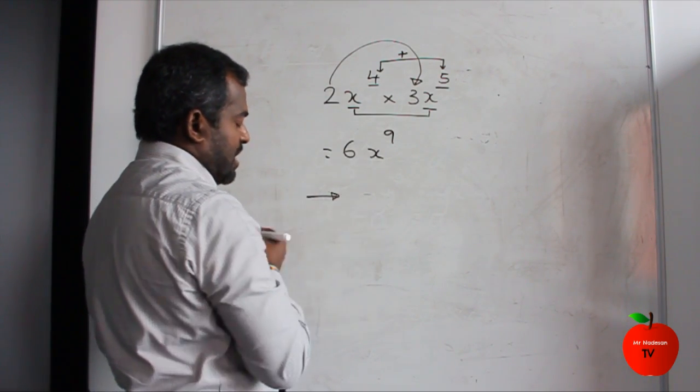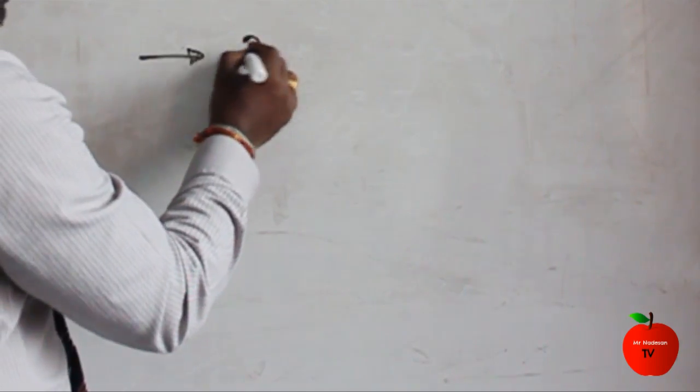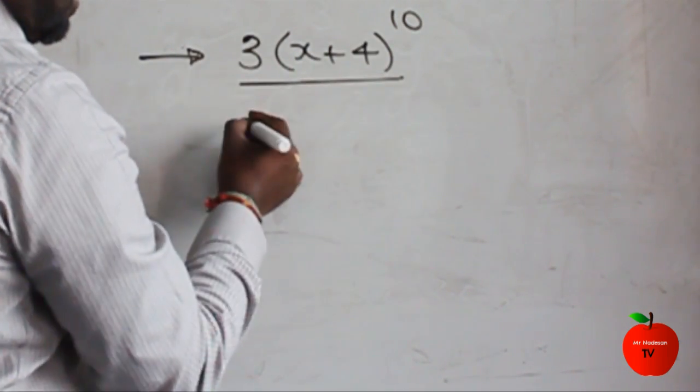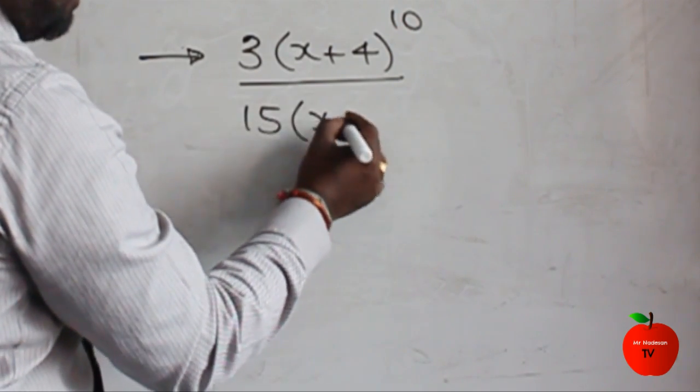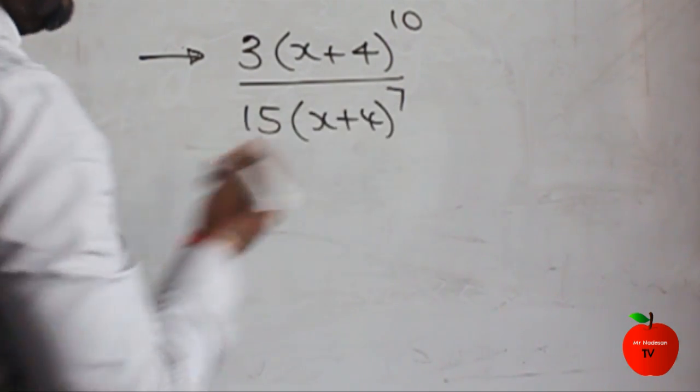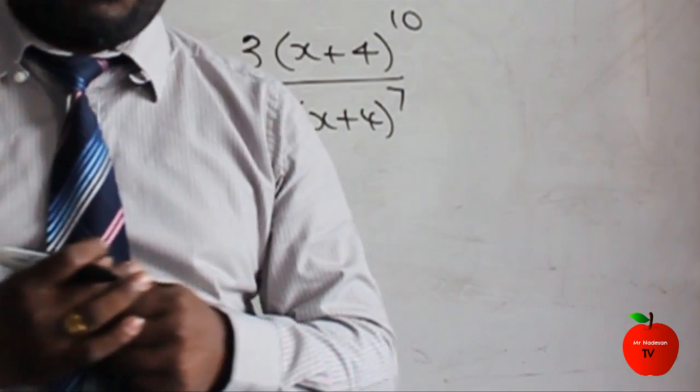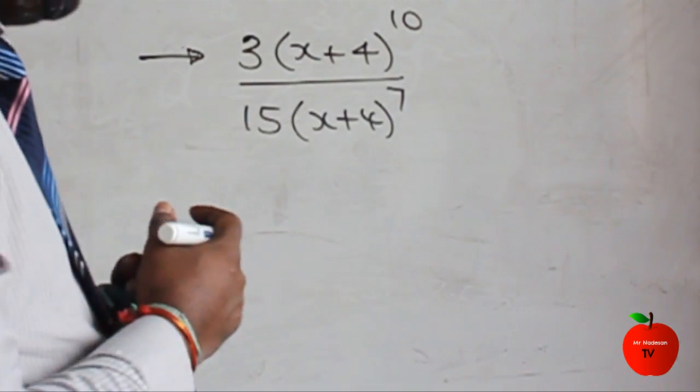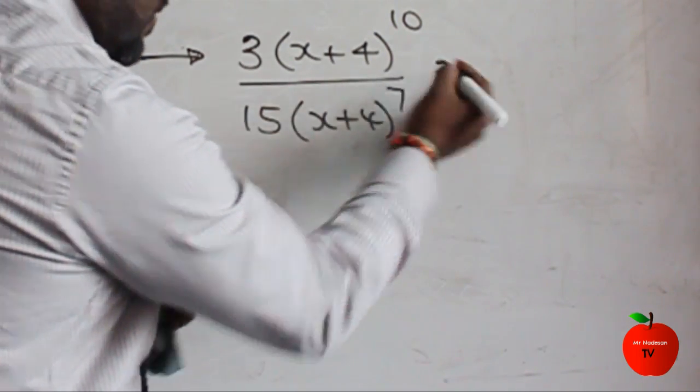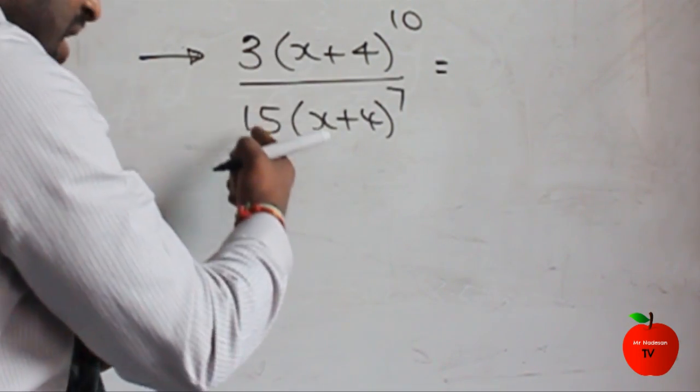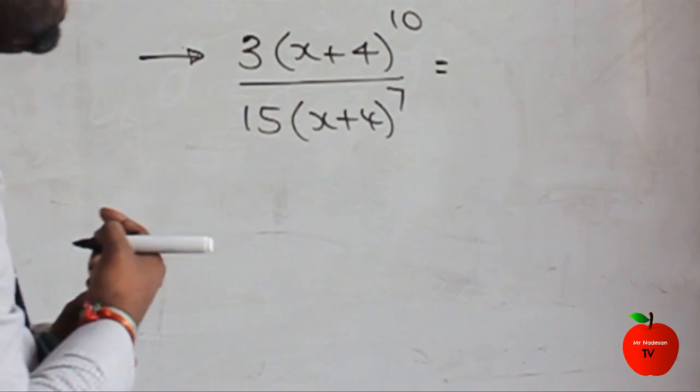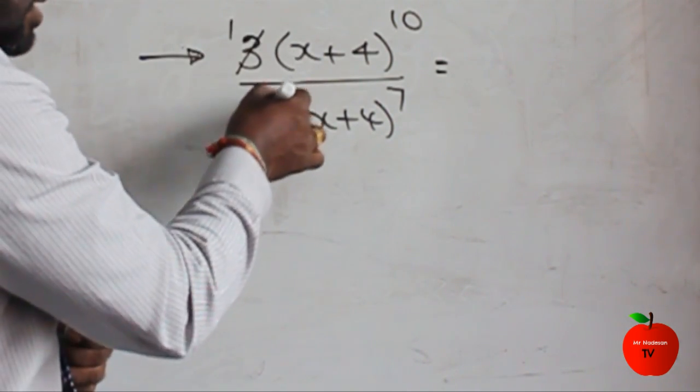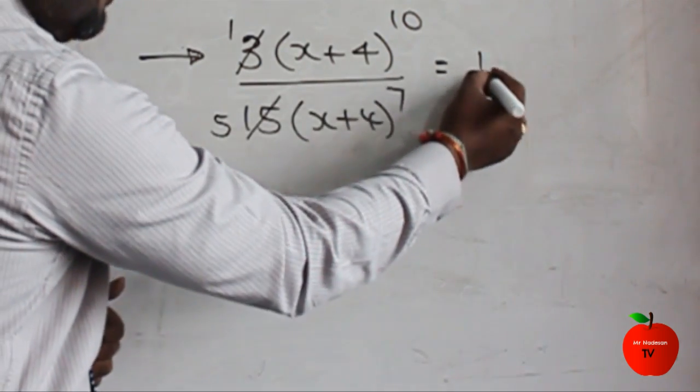Think about this question now: 3(x+4) to the power 10 over 15(x+4) to the power 7. That's going to be great work. The same rules we have to use. Think about the first one. You've got 3 here and 15 here. You can simplify by 3. How many 3s in 3? 1. How many 3s in 15? 5.